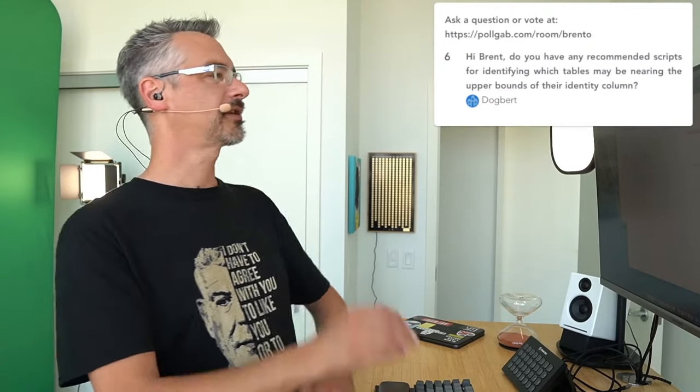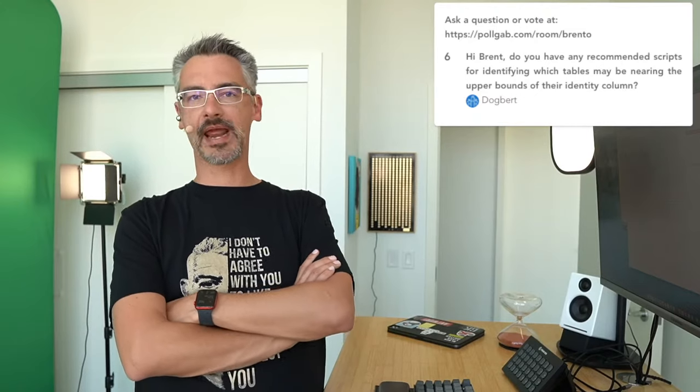Dogbert asks: do you have any recommended scripts for identifying which tables may be nearing the upper bounds of their identity column? Yes — SP_BlitzIndex. Just run it in the database of your choice with no additional parameters and it'll warn you when you're within 15 or 20 percent of running out of values on a column. SP_BlitzIndex gives you all kinds of useful, insightful advice — it'll tell you when you have too many indexes on the same column, duplicate indexes, foreign key problems, null issues, all kinds of stuff.